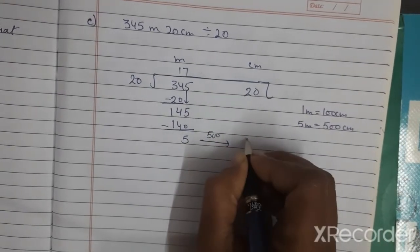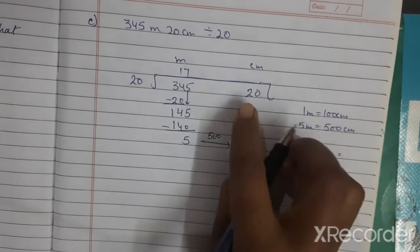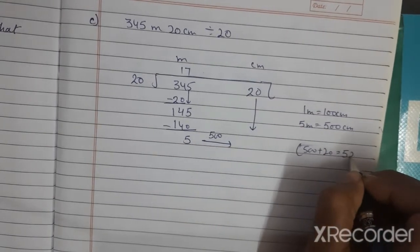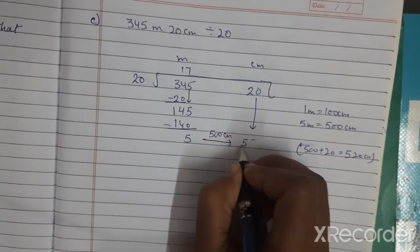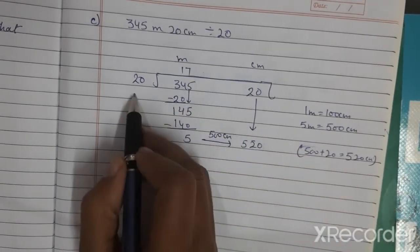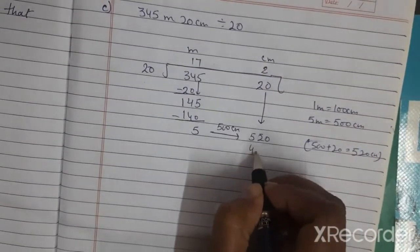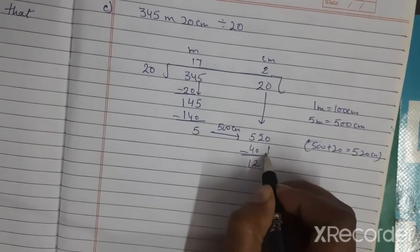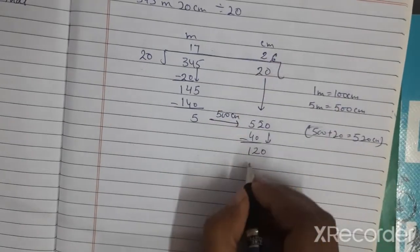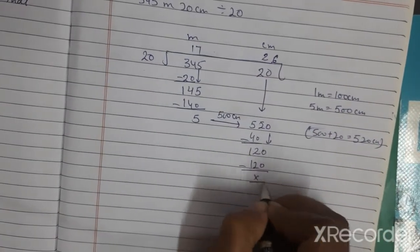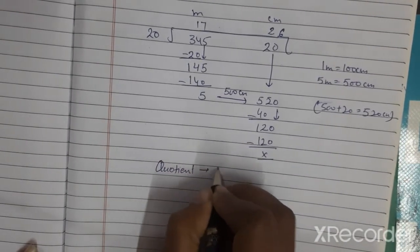5 meter = 100 × 5 = 500 centimeter. 500 cm plus the 20 cm we have gives 520 centimeter. Now divide 520 by 20. 20 × 26 = 520, subtract gives 0. So the answer is 17 meter 26 cm.